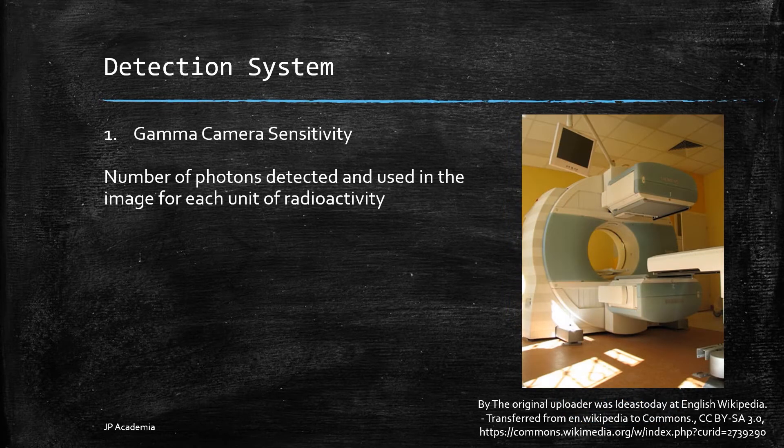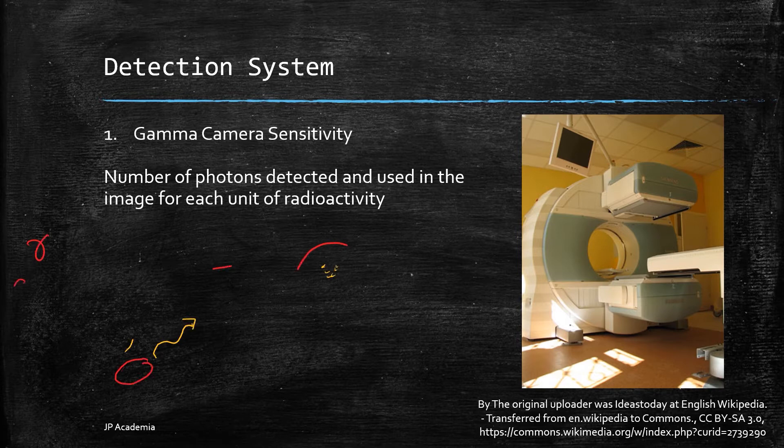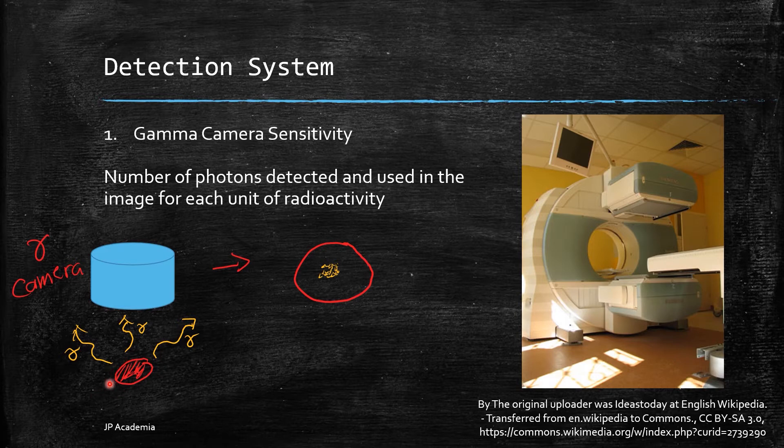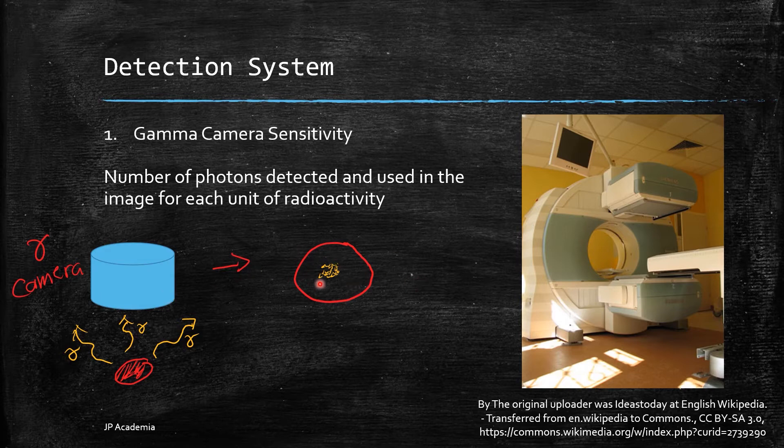Gamma is emitted equally distributed in all directions, as shown here in my drawing. Let's say this is a radioactive substance emitting gammas. Then we have this gamma camera, and this will form this image. The yellow refers to the signal.